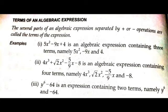In the second example, 4x³ + √2x² − 5x/9 − 8, it is an algebraic expression containing four terms. The third example contains two terms: the first one is y⁶ and the second one is −64.